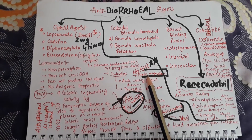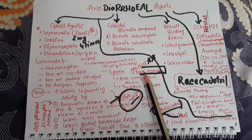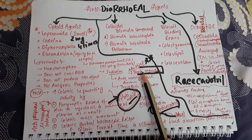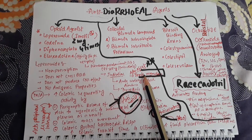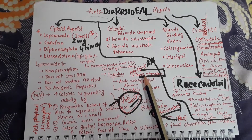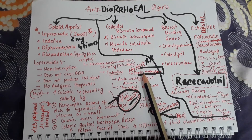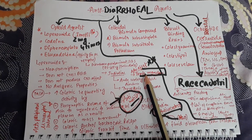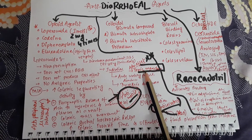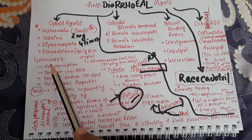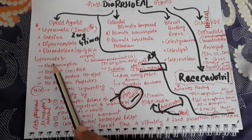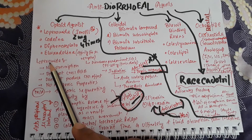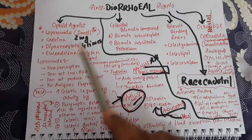However, loperamide has limitations in infectious diarrhea — it may cause toxic megacolon. Because loperamide increases fluid absorption from the intestinal and colonic segment, the bowel becomes impacted, causing bacterial overgrowth over the colon. In infectious diarrhea, this bacterial overgrowth produces toxic megacolon. This is an important adverse effect, and the contraindication of loperamide is that it cannot be given in infectious diarrhea because it causes toxic megacolon.